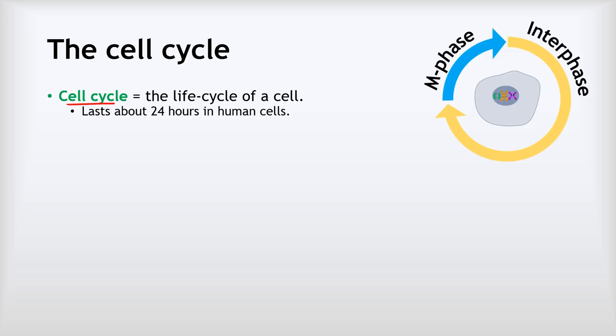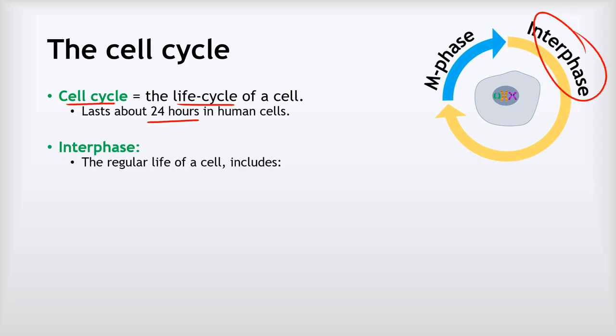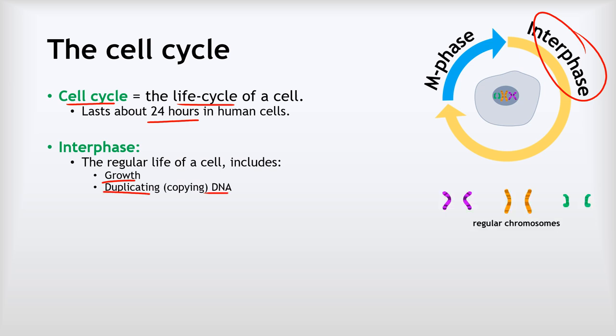Mitosis is part of the cell cycle, which is the life cycle of a cell. It lasts about 24 hours in the average human cell, though it varies massively depending on the type of cell. There are two main stages: the first — and most of the cell's life — is interphase. During interphase, growth takes place: a cell formed by mitosis will be quite small and will increase in size over time.